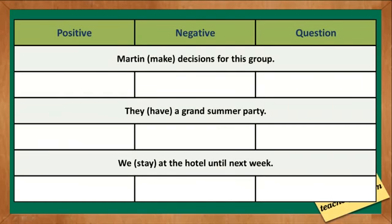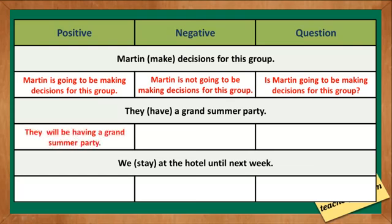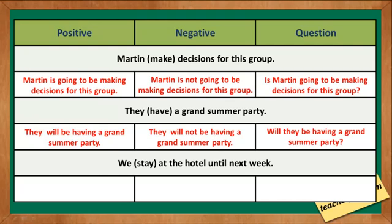The fourth one: 'They have a grand summer party.' The correct positive statement is: 'They will be having a grand summer party.' The negative statement is: 'They will not be having a grand summer party.' And the question is: 'Will they be having a grand summer party?'